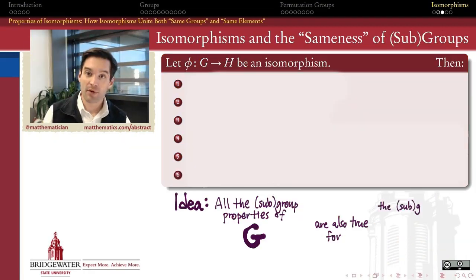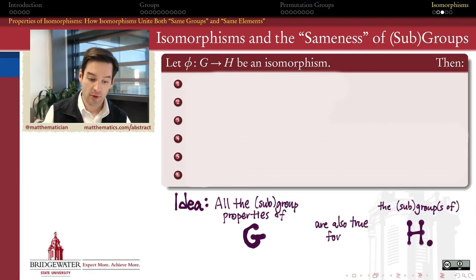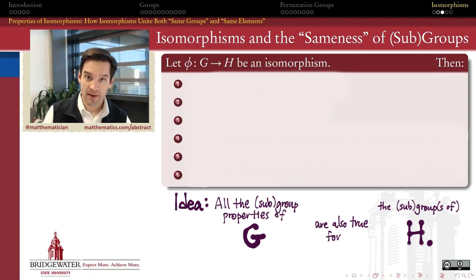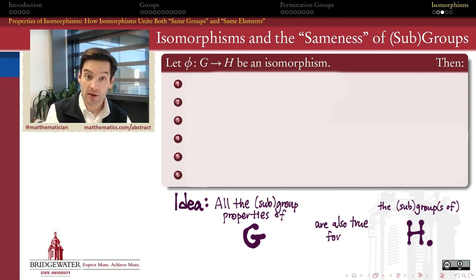If I have a property of the group G that I'm interested in, or of one of its subgroups, what we'd like to be able to say is that that same property also holds for the associated subgroup, or the entire group H, under this isomorphism.